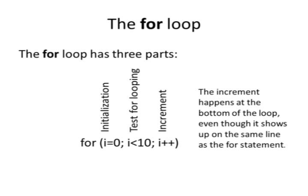The FOR loop has three parts: initialization, the test to see if we want to loop again, and the increment. The FOR loop is just a fancy WHILE loop. It has the initialization, the test, and the increment all put together in one line.